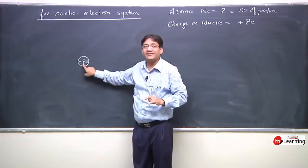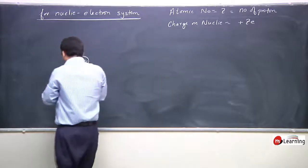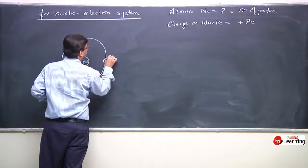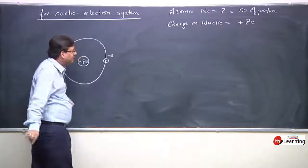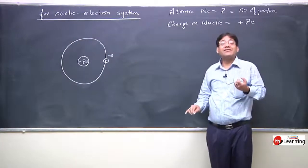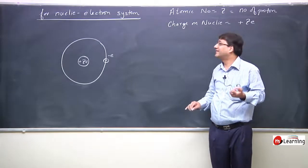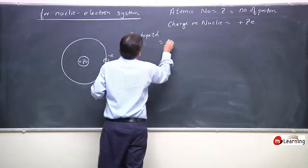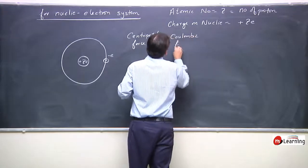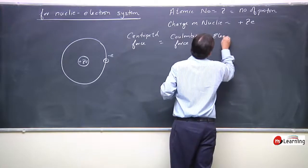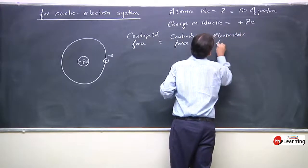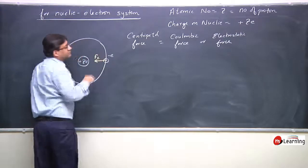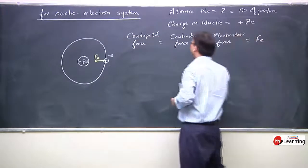The charge on the nucleus is plus ZE. An electron revolving around it has charge minus E. The electrostatic or Coulombic force between opposite charges is always attractive.